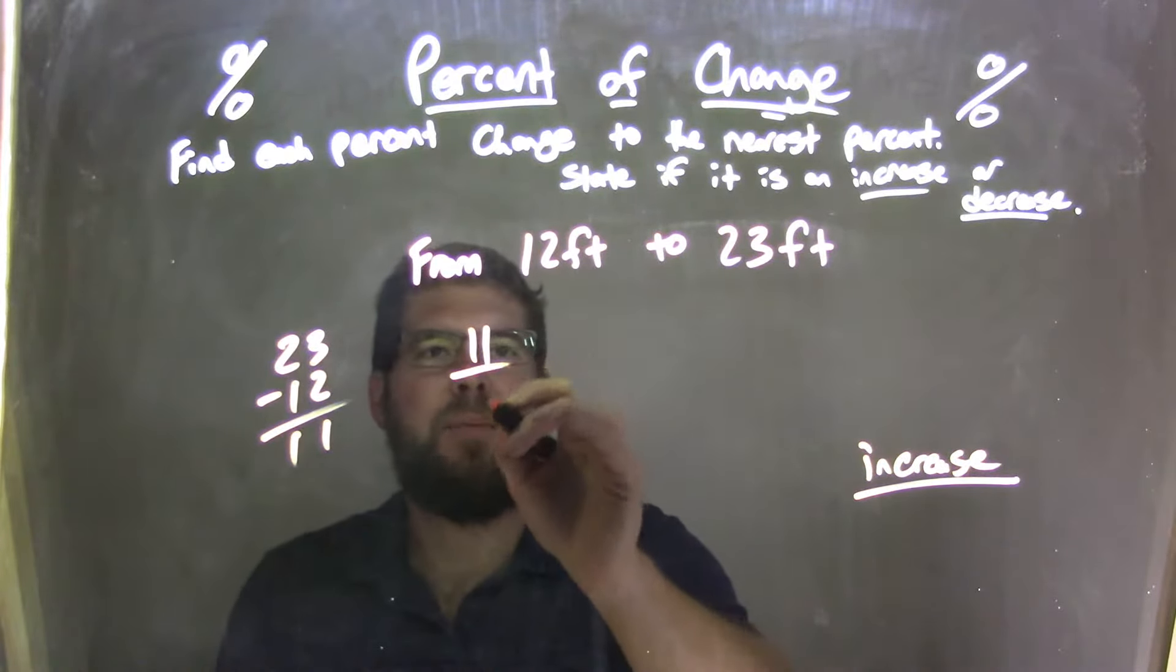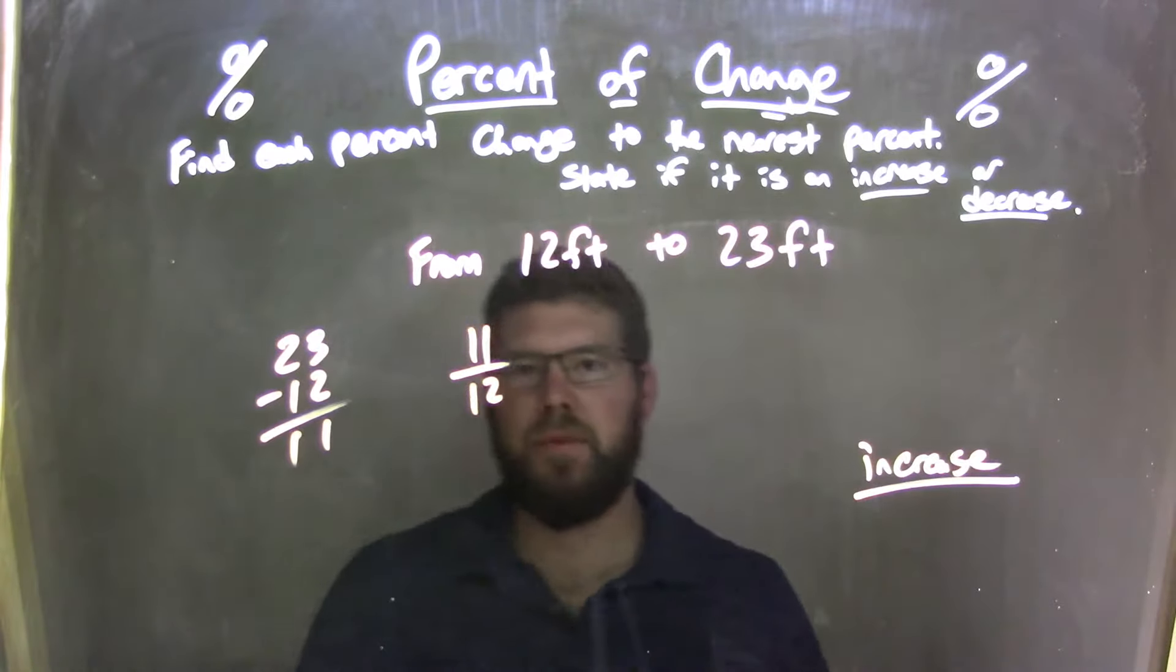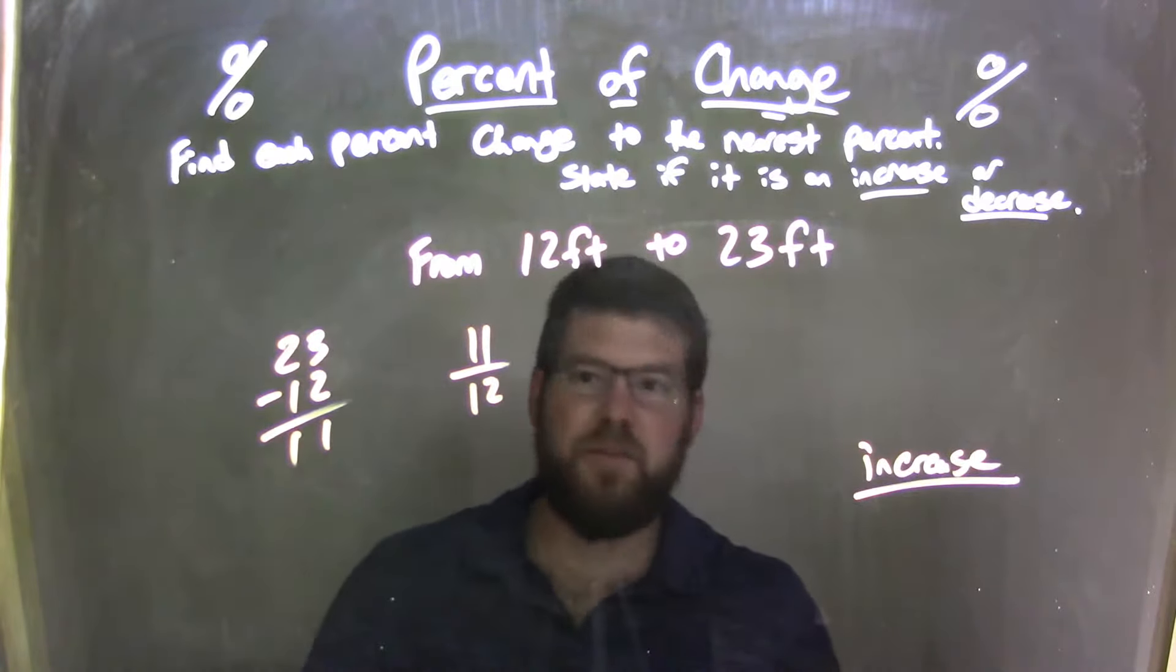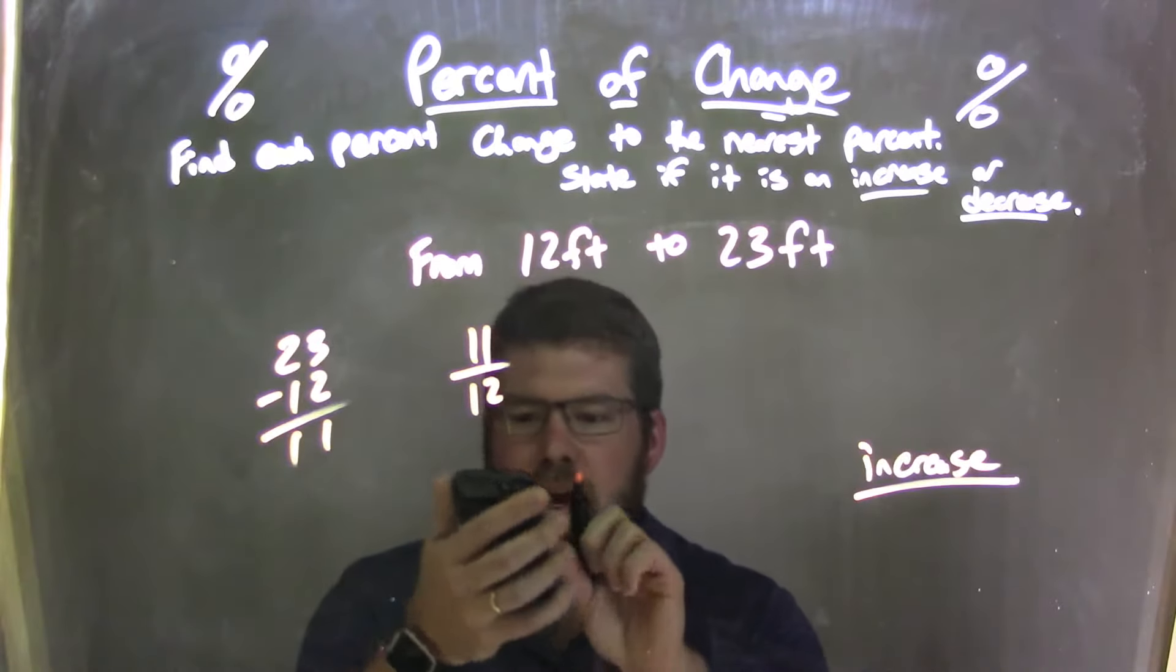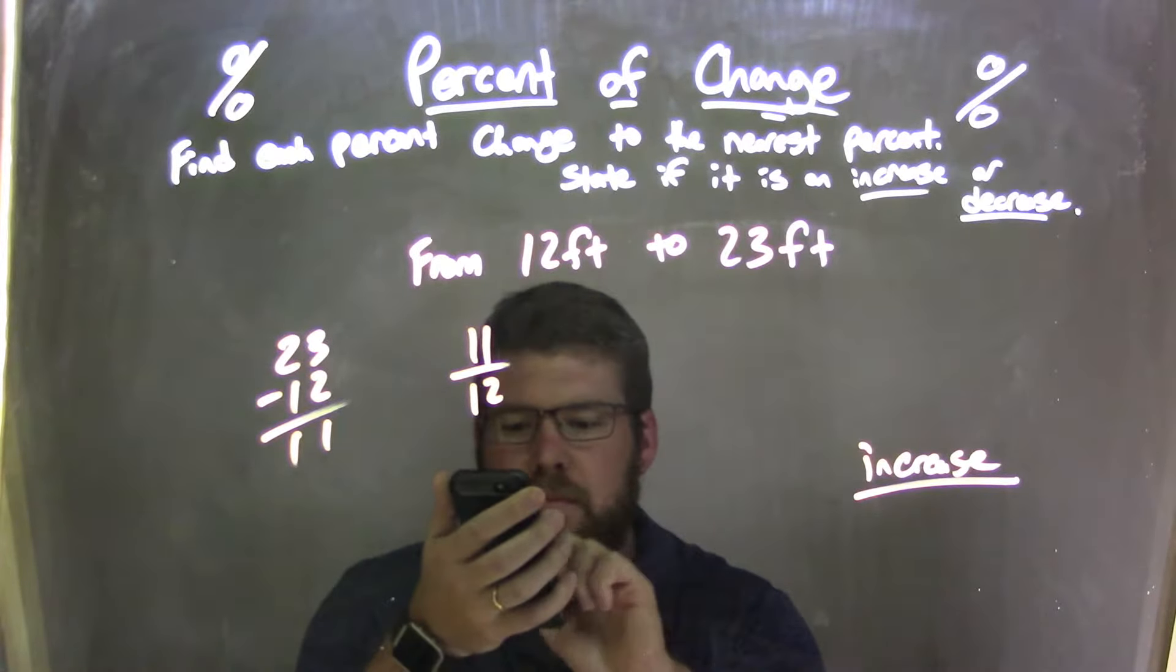We take that 11, divide it by the 12. Now we need to find the decimal of that, so we take 11, divide it by 12 on the calculator.